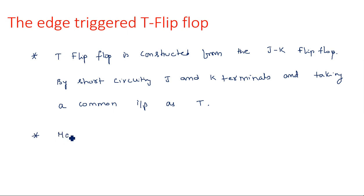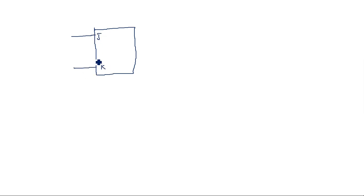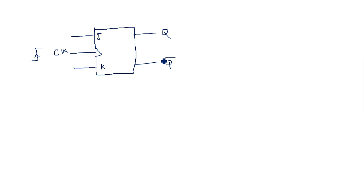The main application is in counting operations. If you look at the JK flip-flop, we know it has two inputs J and K, one clock signal — this is a positive edge clock signal — and outputs Q and Q-bar. For all flip-flops, whether SR, JK, D, or T, the two outputs are Q and Q-bar: one is the true form and the other is the complemented form.